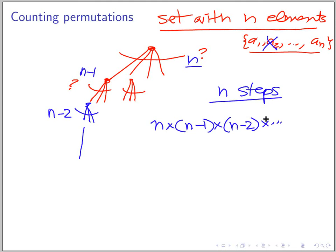So from our principle, the number of ways we can choose is the product of all these numbers, up to the next to last step we have two choices, and the last step we have one. And this is, as we have already defined, n factorial.